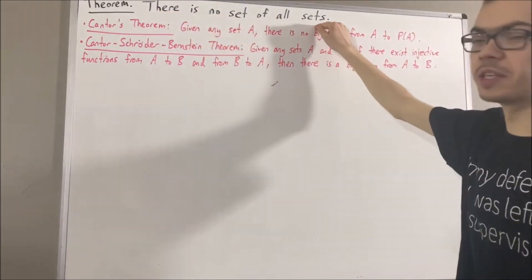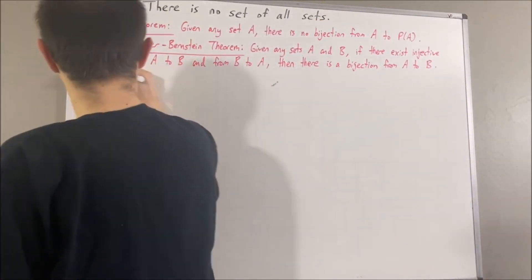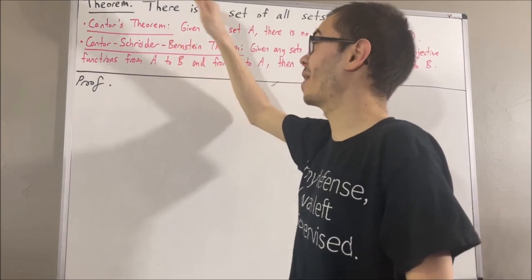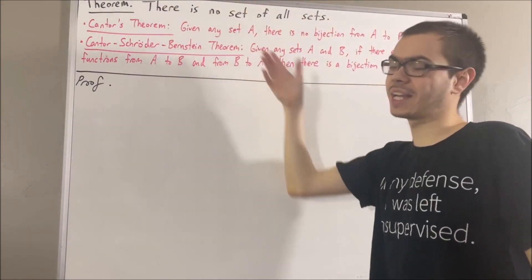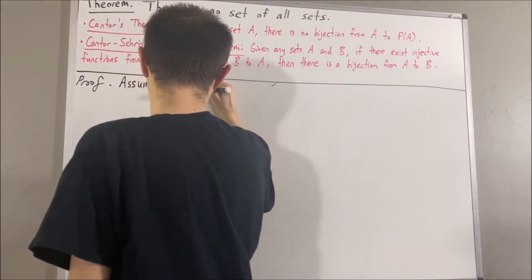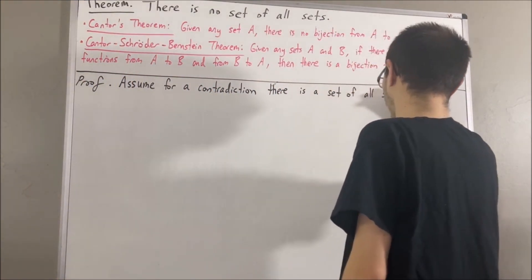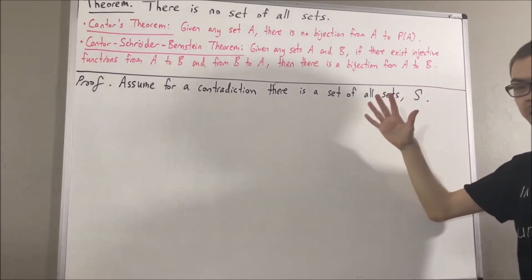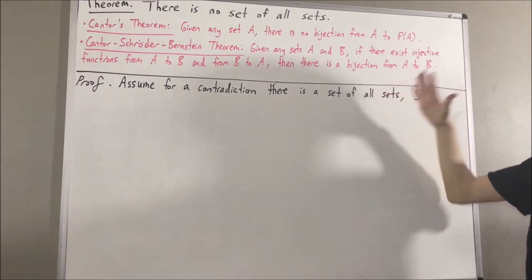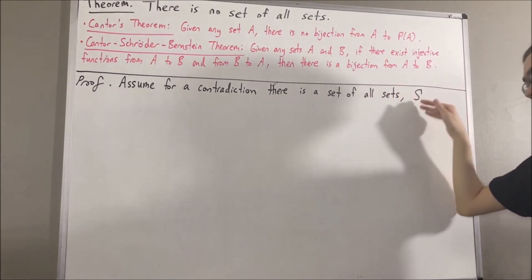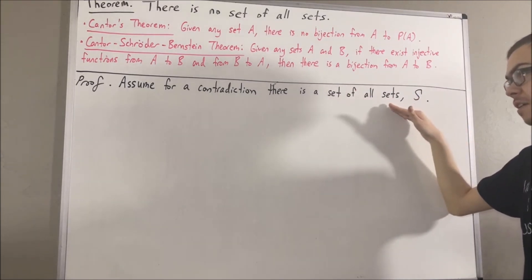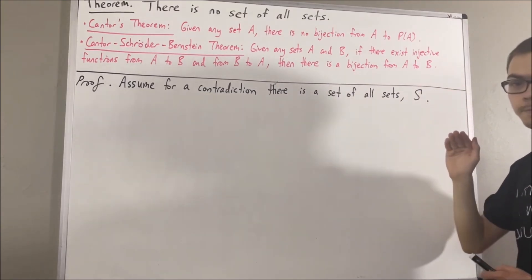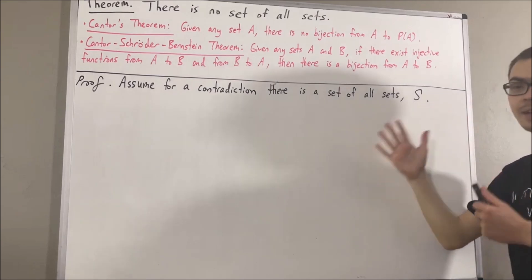Let's get into proving this result. To start with the proof, we will assume for a contradiction that there is a set of all sets — call it S. If we consider the power set of S, the power set of S is the set of all subsets of S. And since S is a set of all sets, every subset of S is an element of S. In other words, the power set of S is a subset of S.